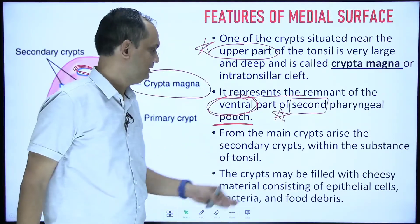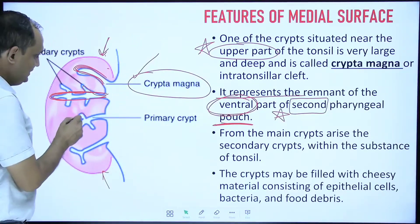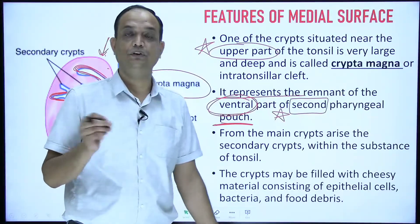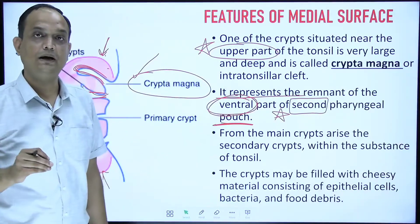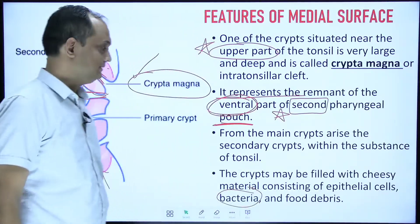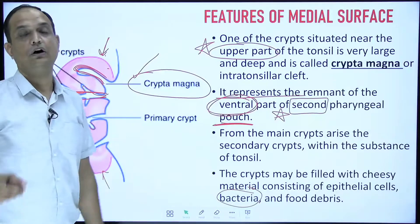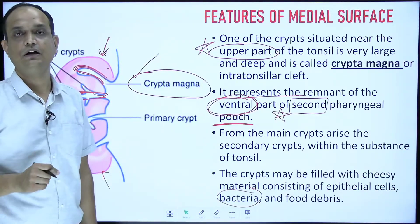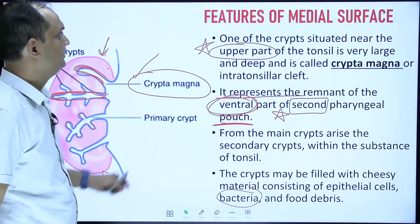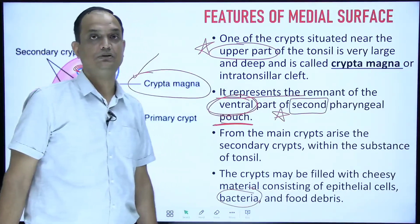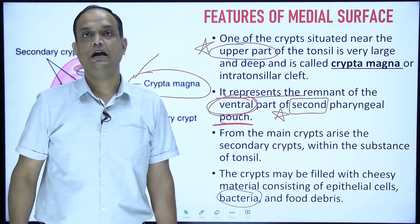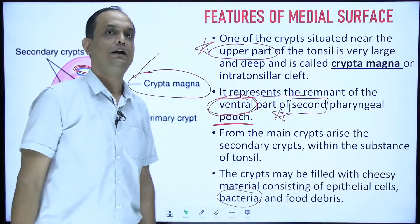From the main crypt, secondary crypts arise as branches of the primary crypts. These crypts fill with cheesy material, food particles, epithelial cells, and bacteria. The crypts are a characteristic feature of the palatine tonsil, lined by non-keratinized stratified squamous epithelium. The most important characteristic feature of the medial surface is the presence of crypts, with the largest crypt being the crypta magna.